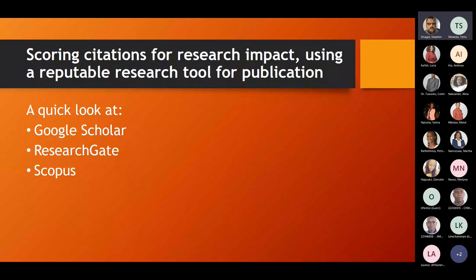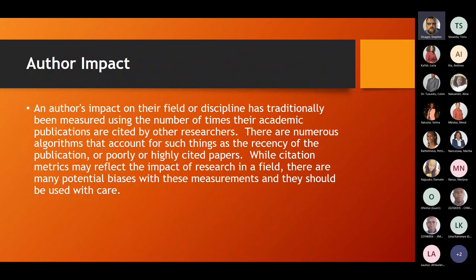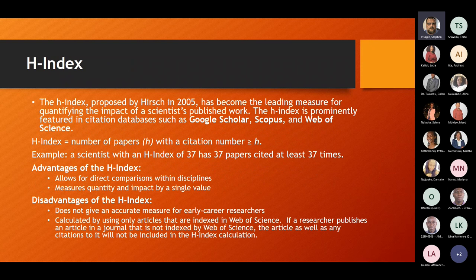An author's impact on their field has traditionally been measured by the number of times their academic publications are cited by other researchers. It's a whole network — how many times are researchers looking at your work, and how many times are you citing others' work. There are numerous algorithms that account for things like recency of publication. Citation metrics may reflect research impact, but there are many potential biases, and they should be used with care.